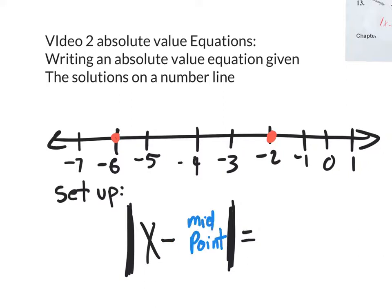What does midpoint mean? The point in the middle. So if you're at negative six and negative two, what would the point in the middle be? It would be negative four — that's your midpoint.